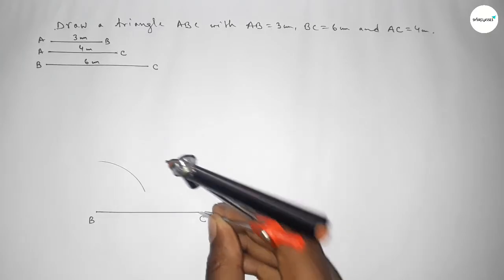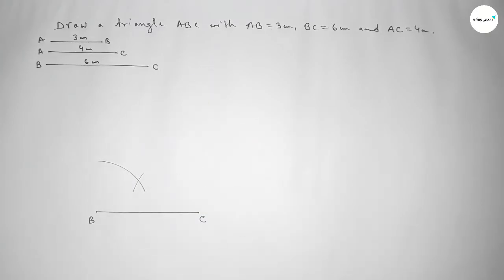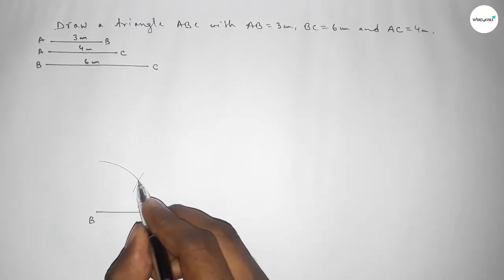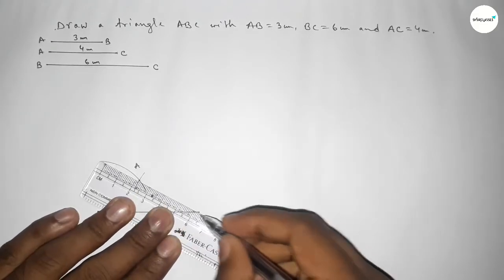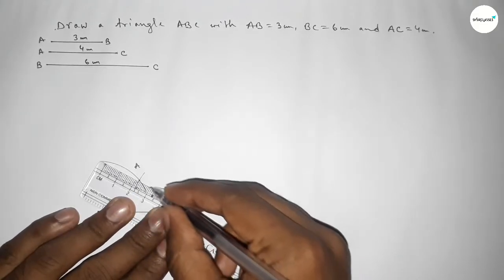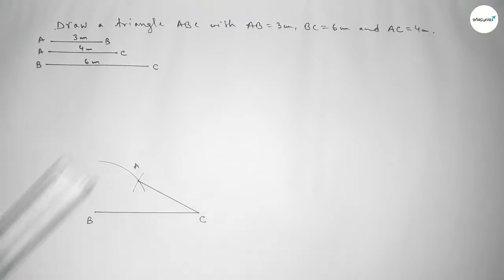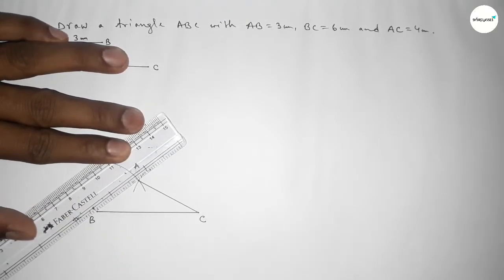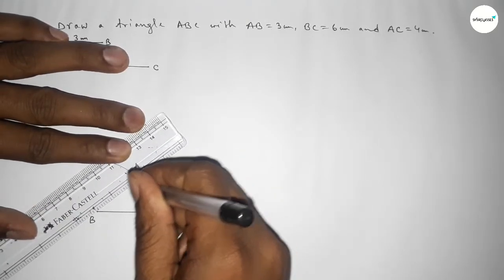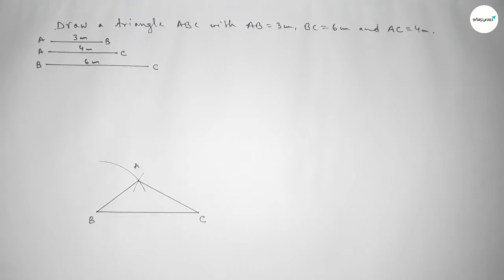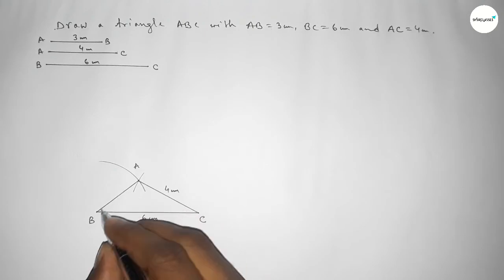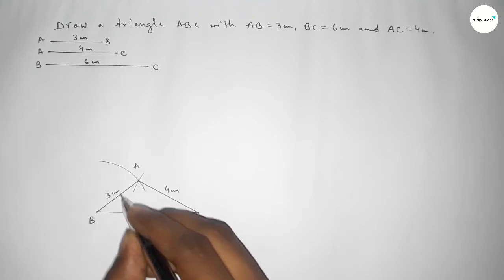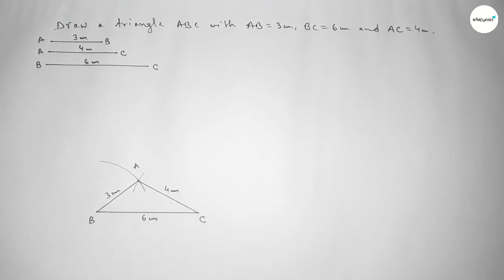We place the compass on point C and cut an arc so that both curves intersect at point A. Then we join A and C, and join A and B, to get triangle ABC. The side BC equals six centimeters, AC equals four centimeters, and AB equals three centimeters.